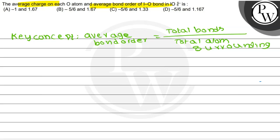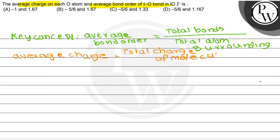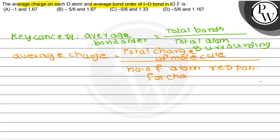Coming to the next formula, the average charge is equal to total charge of the molecule divided by number of atoms responsible for the charge. This is the formula.